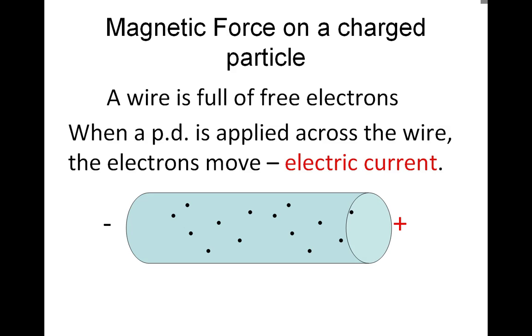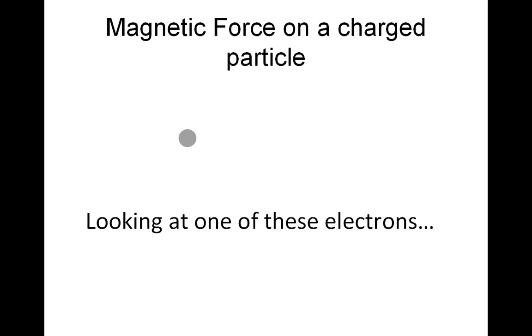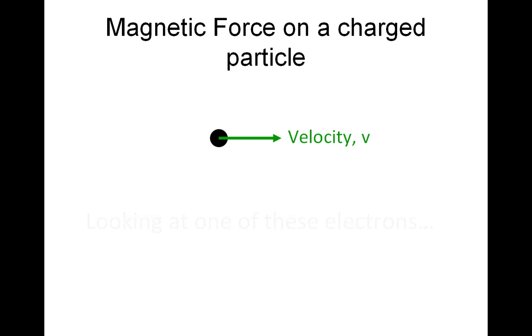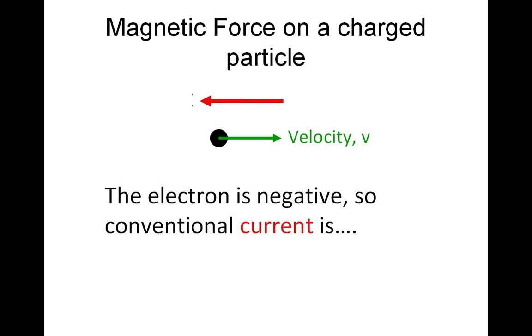The force is actually determined by each individual electron. Let's look at a single electron moving to the right with velocity V. Remember that the electron is negative though, so our conventional current I is to the left.